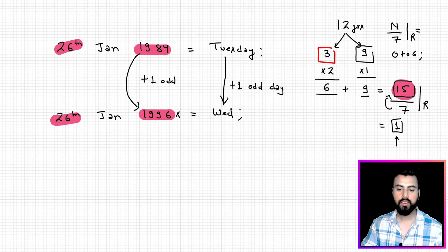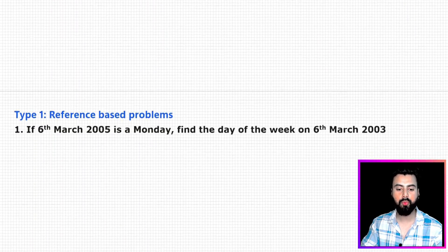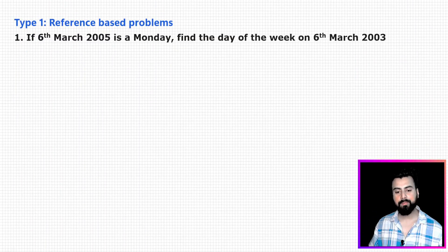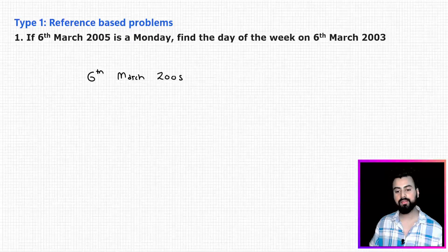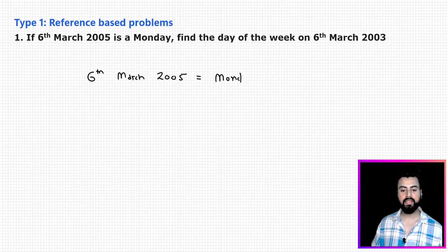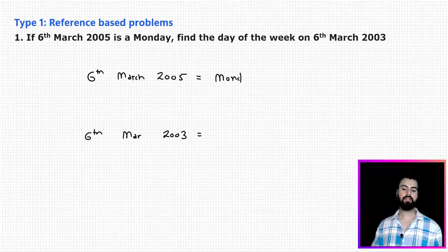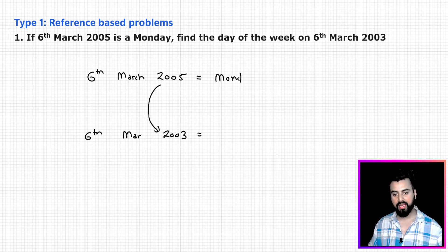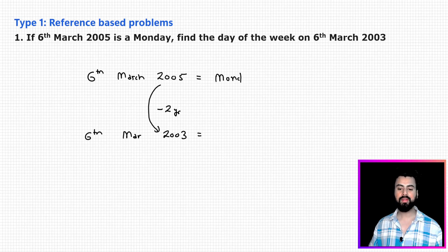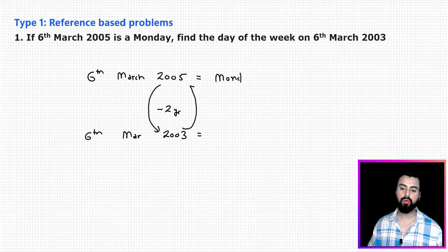Wednesday is the answer. After understanding this, we are ready to solve the first type of problem: reference-based problems. In this type, a reference is given. The question says 6th March 2005 is Monday, and we have to find the day on 6th March 2003. Since I have to go back two years, think of it as going forward from 2003 to 2005.